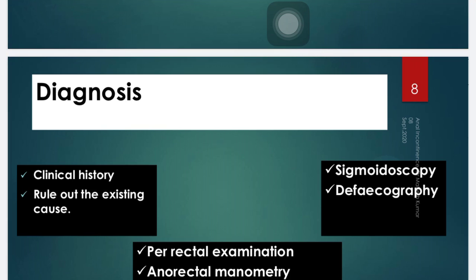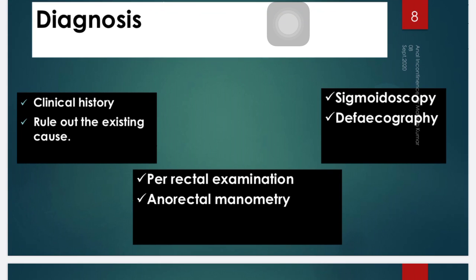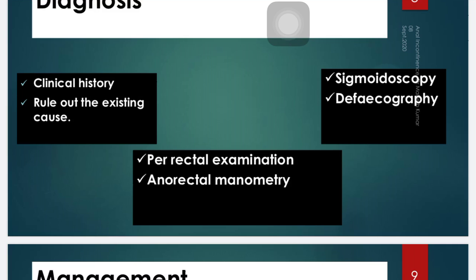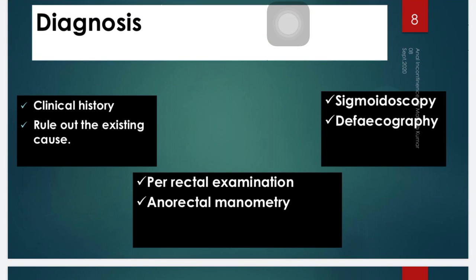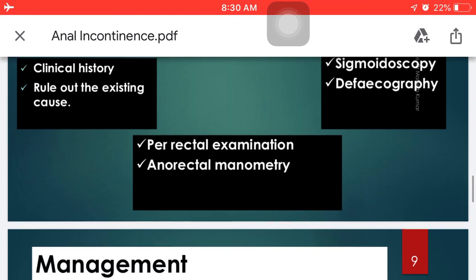How to make the diagnosis? The diagnosis is mainly made on the basis of clinical history and by ruling out existing causative factors. Per-rectal examination is sufficient in most cases, but in some conditions anorectal manometry is required to measure pressure in the anal region. Sigmoidoscopy and defecography are also important diagnostic tools for diagnosing anal incontinence.